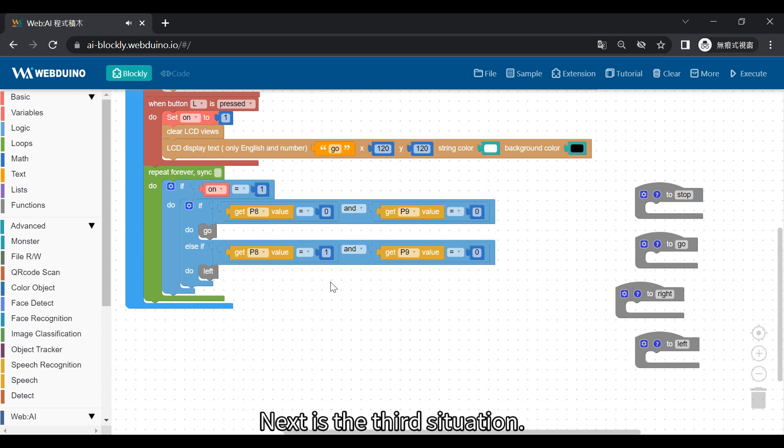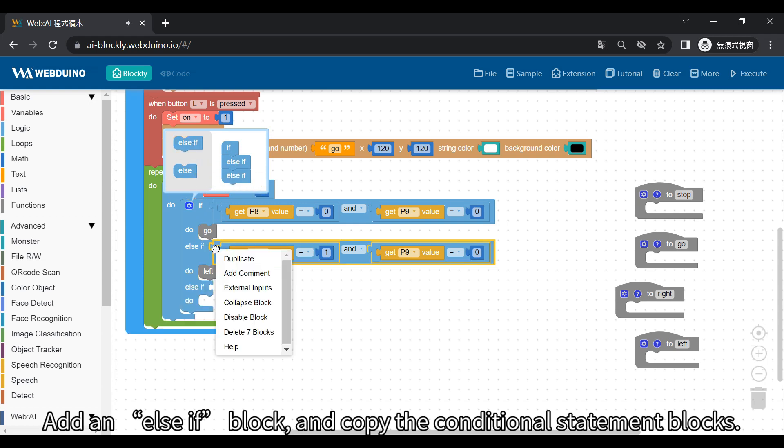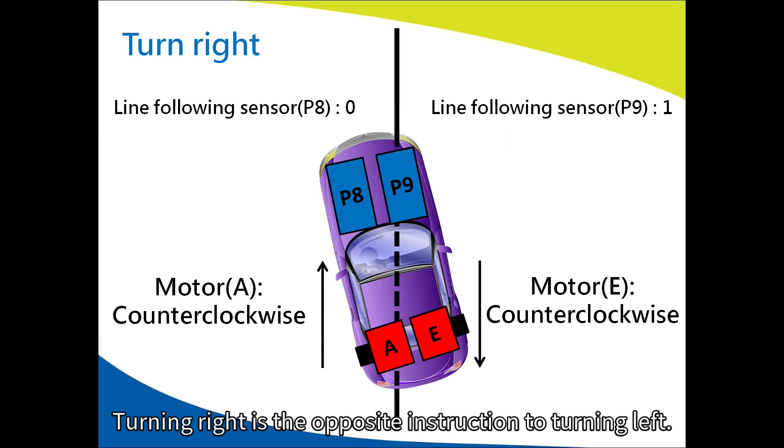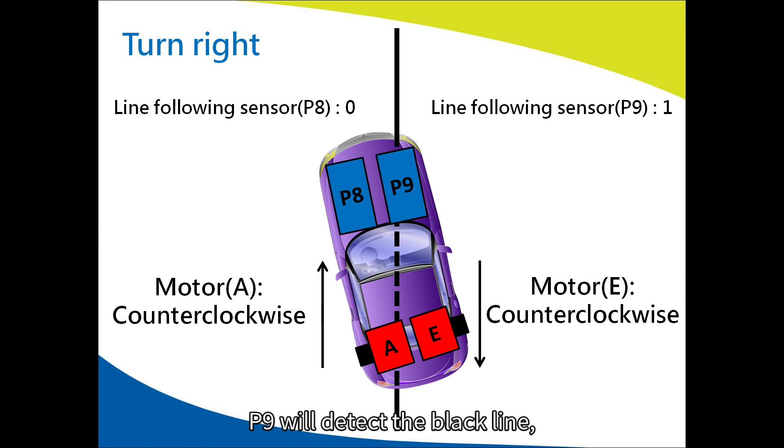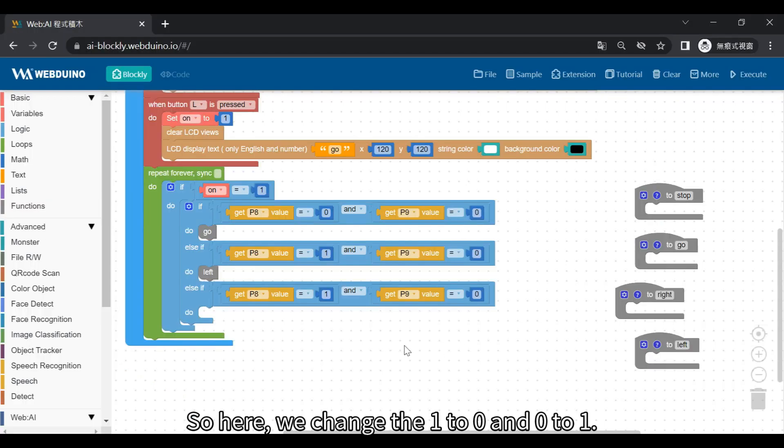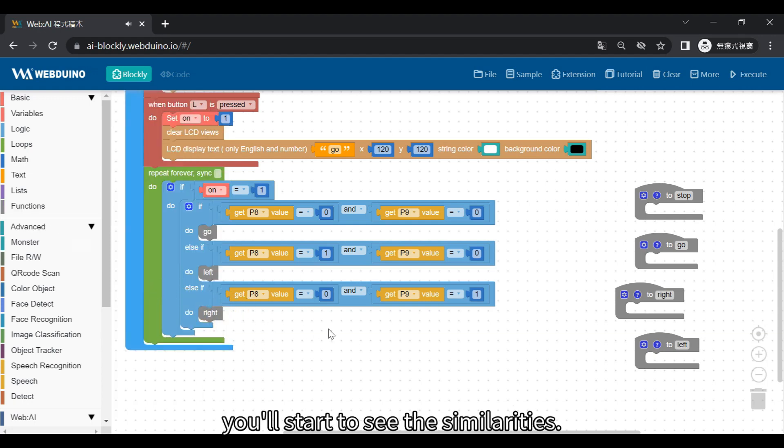Next is the third situation. Add an ELSIFF block and copy the conditional statement blocks. Turn right is the opposite instruction to turning left. P9 will detect the black line, and the control box will think nothing has been detected. So here, we change the 1 to 0 and 0 to 1. Add the right block. Once you get the hang of it, you'll start to see the similarities.